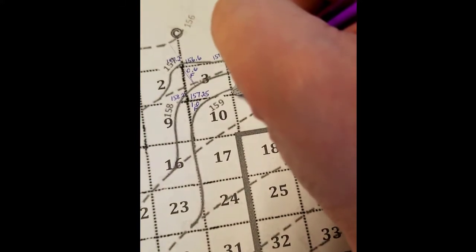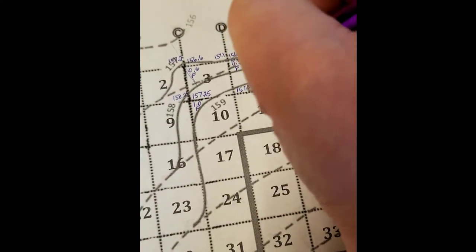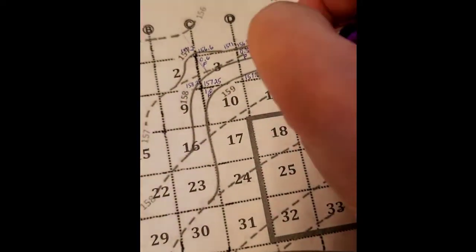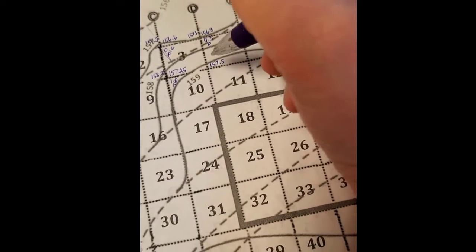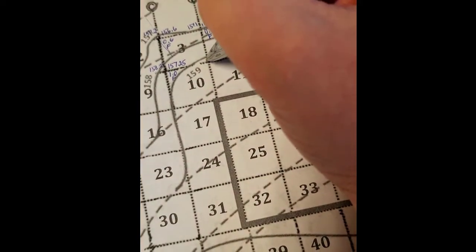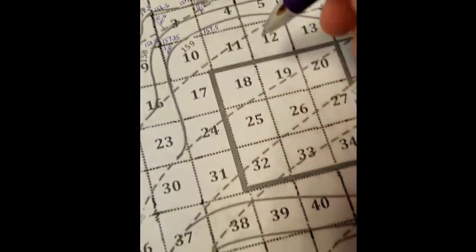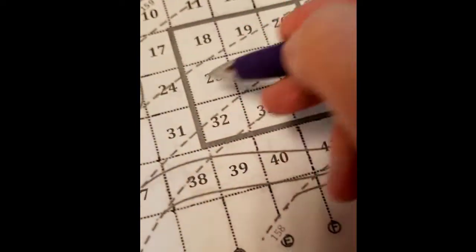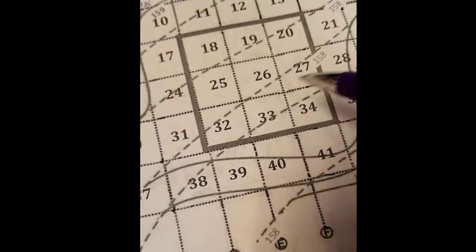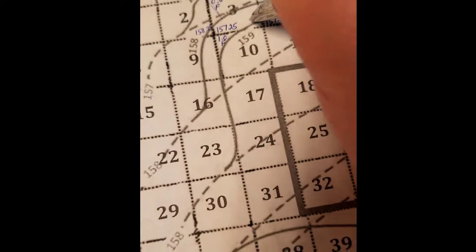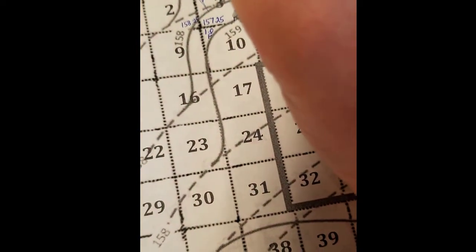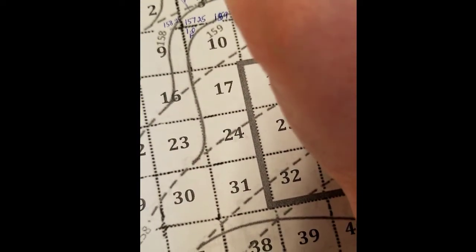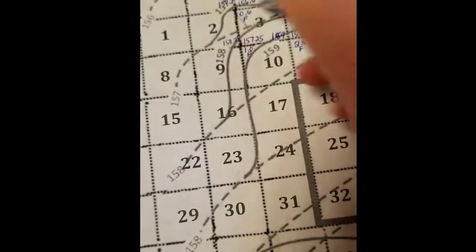Do the same thing here. Existing ground is 157.5. And proposed ground, you can see this is 159. Where's the next one? All the way down here, and it is also 159. So this whole area becomes the building pad and it's 159. So my desired, my finished proposed ground is 159, and so that's a difference of 2.5 that I'm going to fill. These are all fill.